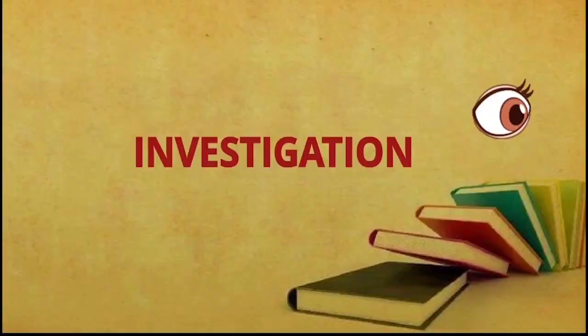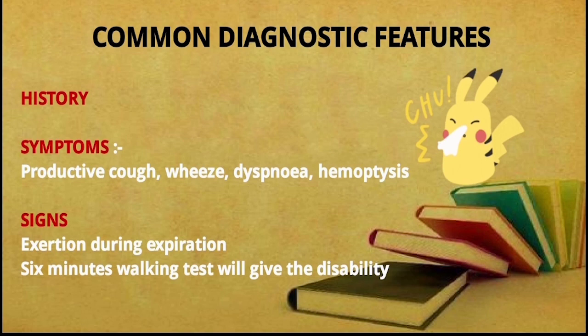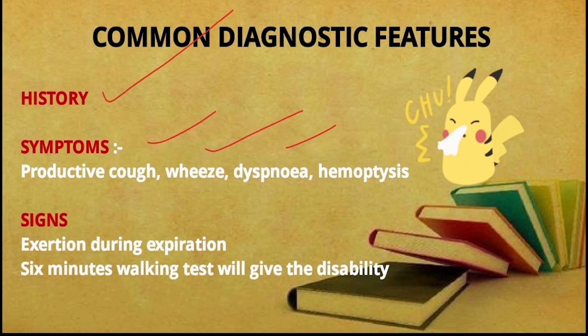Moving to investigations, there are common diagnostic features. History is common in both, but for bronchitis you must specify the two consecutive years and three consecutive months criteria. Symptoms — cough, dyspnea, wheeze, and hemoptysis — are common in both. Signs include exertion during expiration in both, and dyspnea on walking test.